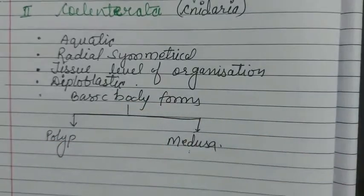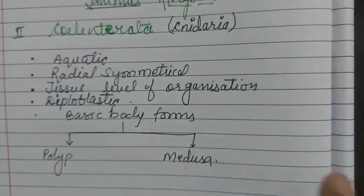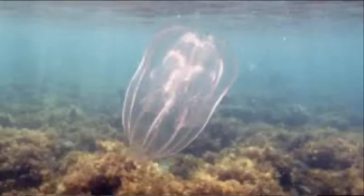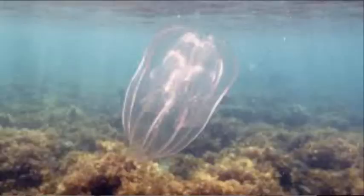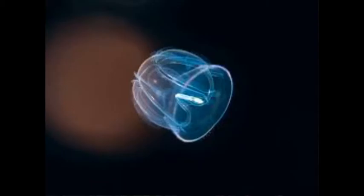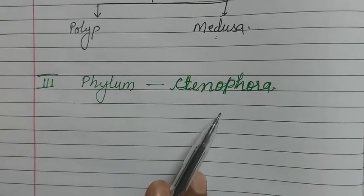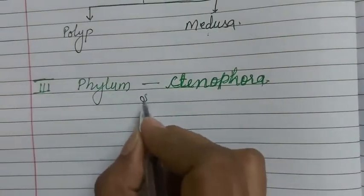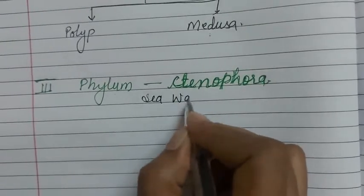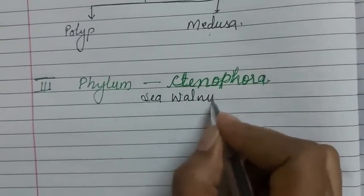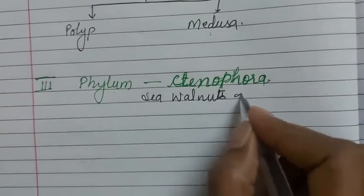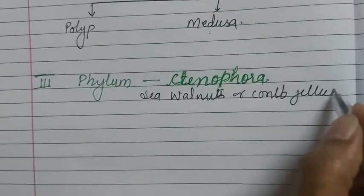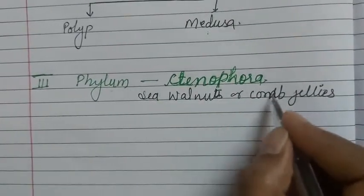That was Coelenterata. Next, we will discuss the next phylum: Ctenophora. Ctenophora — what is Ctenophora? They are commonly known as sea walnuts or comb jellies.